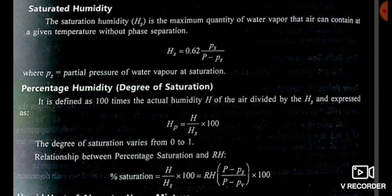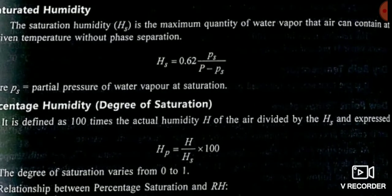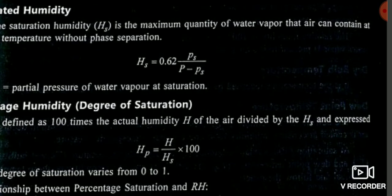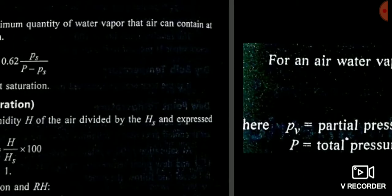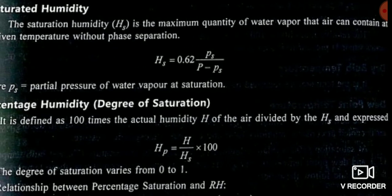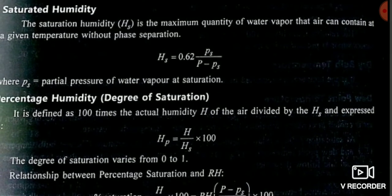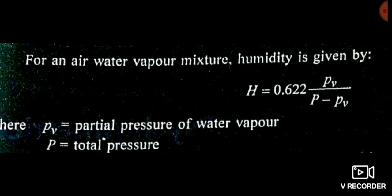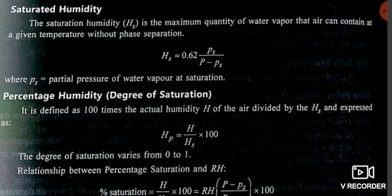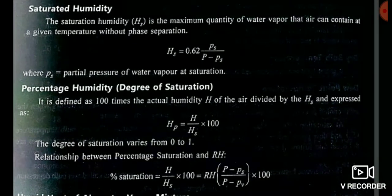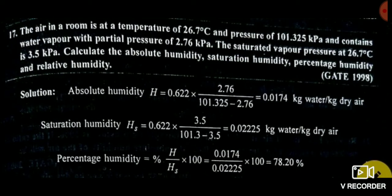An important distinction: for actual humidity we use Pv, the partial pressure of water vapor actually present in the mixture, while for saturated humidity we use Ps, the partial pressure of water vapor at saturation. You must understand the difference between saturation and actual values. Once that is clear, the remaining concepts are straightforward. Now let's look at some questions.